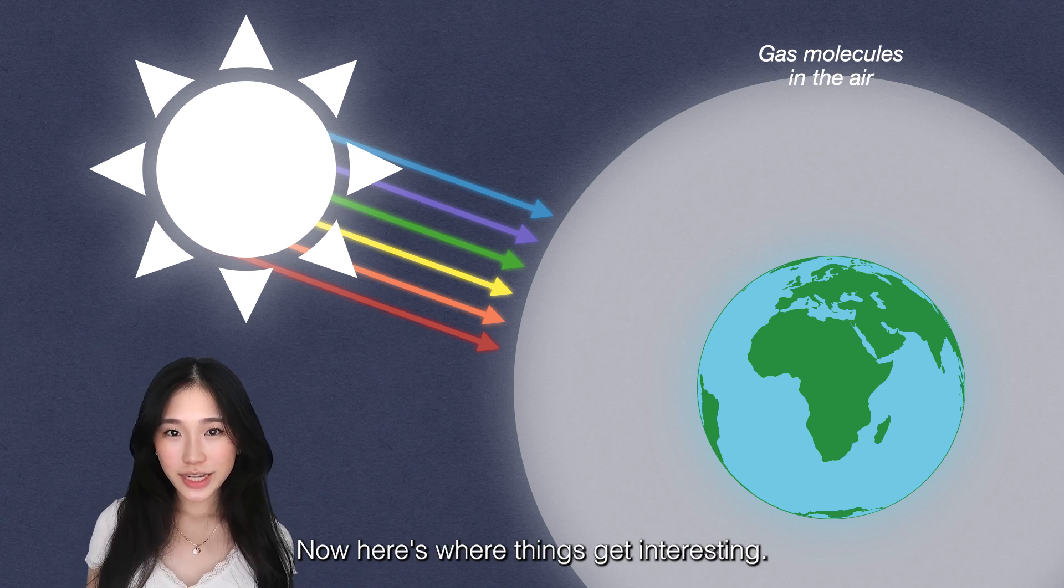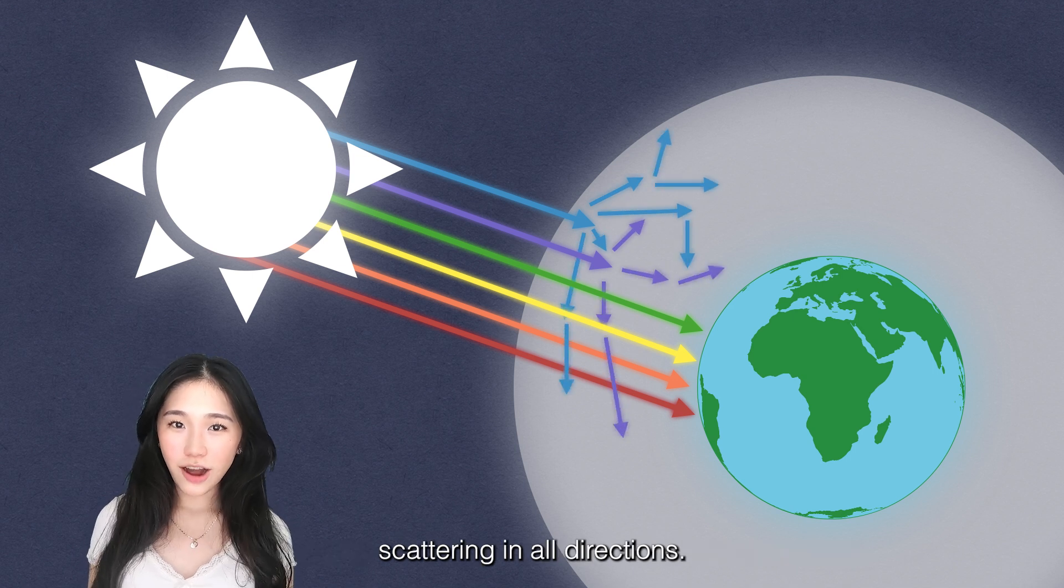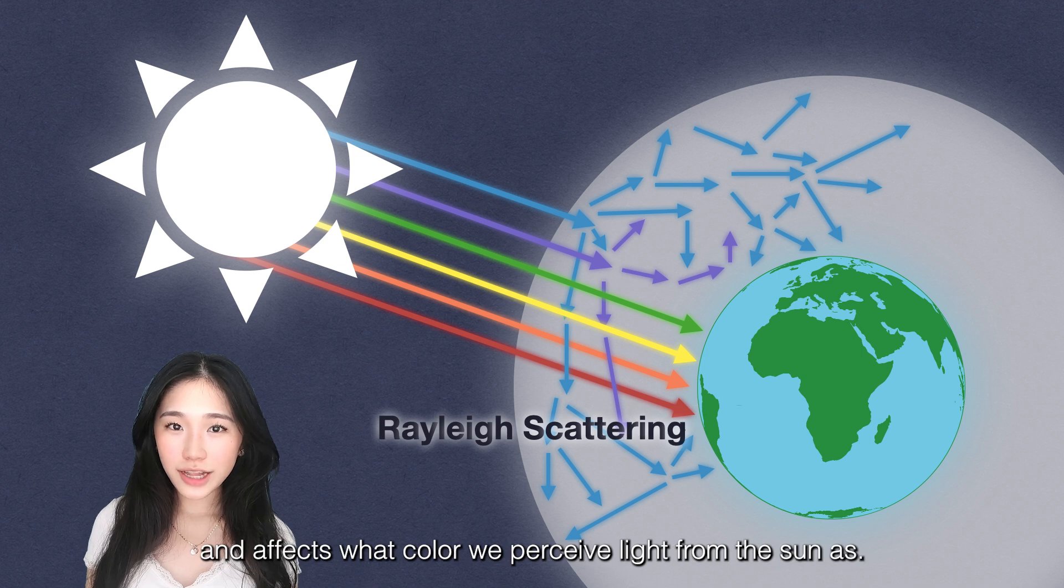Now here's where things get interesting. Light bounces off of these molecules in the atmosphere, scattering in all directions. This process is called Rayleigh scattering and affects what color we perceive light from the Sun as.